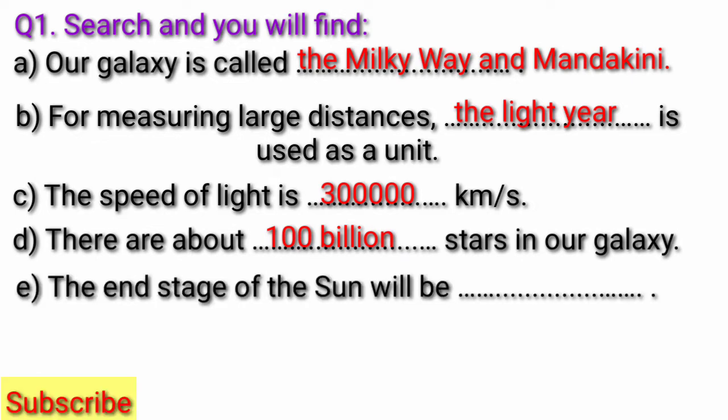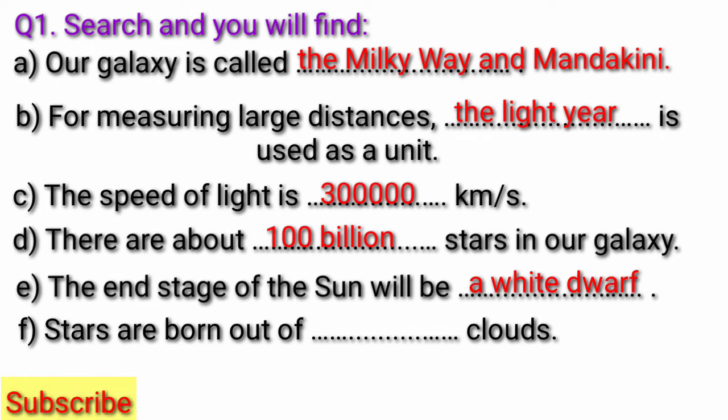Question E, the end stage of the sun will be fill in the blank. Answer, the end stage of the sun will be a white dwarf. Question F, stars are born out of fill in the blank clouds. Answer, stars are born out of interstellar clouds.